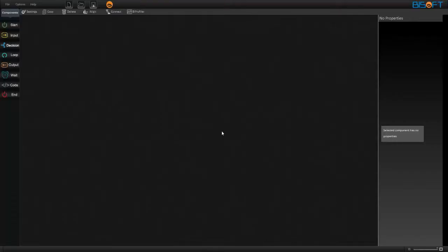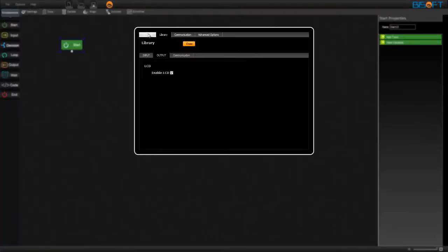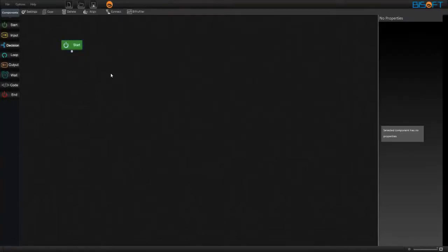Let's get into the programming part for the message display system project. Drag a start component. Under settings tab, go to library, output, enable LCD, close. So you are learning how to interface LCD to B-Box and how to program the B-Box to display any messages on LCD screen.